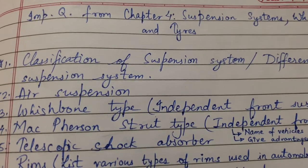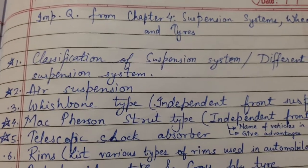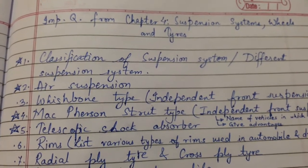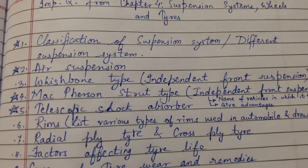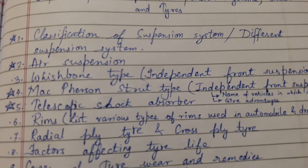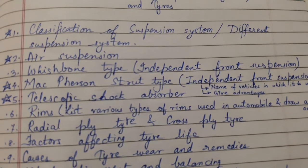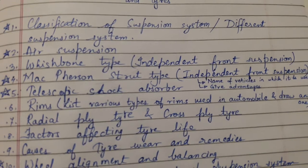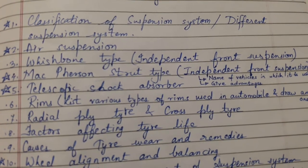Today's topic of discussion is an important question from Chapter 4: Suspension System, Wheels and Tires — classification of suspension systems, different suspension systems, air suspension, wishbone type independent front suspension, and another independent front suspension: MacPherson strut type.